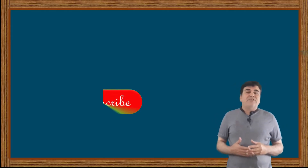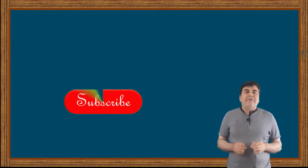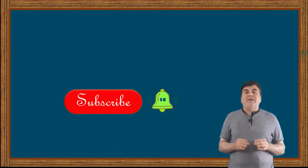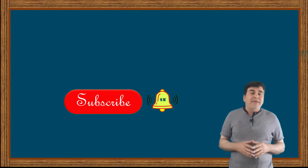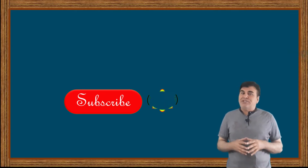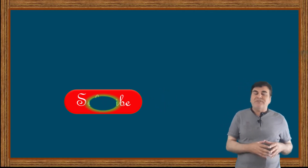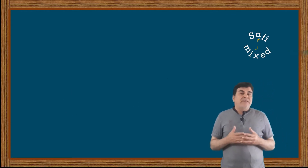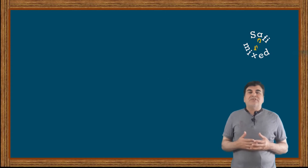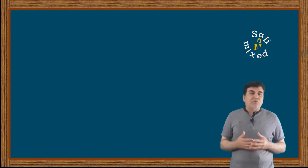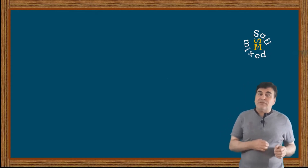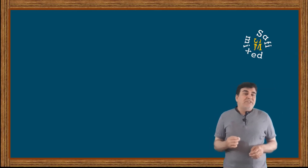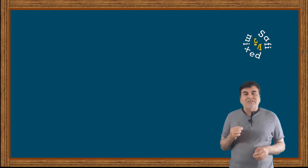Hey guys, welcome to Safi Mixed. In this video you will learn about the applications of the two principles of probability theory, namely the addition principle or addition rule, and the multiplication principle or multiplication rule. To apply these rules, one has to know the difference among mutually exclusive, mutually not exclusive, and independent events.